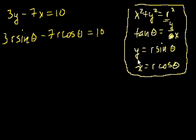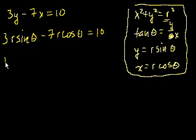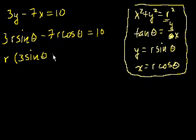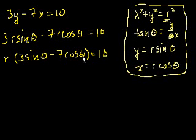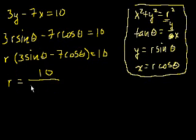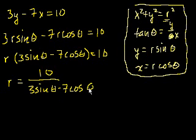Remember, these just came from SOHCAHTOA — nothing fancier than that. Let's simplify and write it explicitly in terms of theta. We factor out r: r times (3 sine theta minus 7 cosine theta) equals 10. Now divide both sides by that expression, and you're left with r equals 10 divided by (3 sine of theta minus 7 cosine of theta).